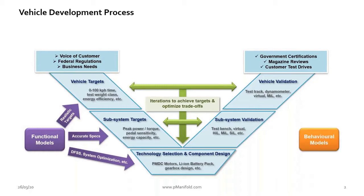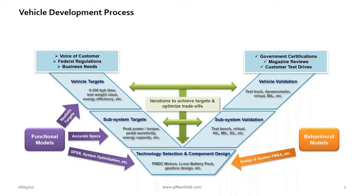Apart from functional models, there are behavioral models. Behavioral models are basically about the intrinsic properties of the subsystem. Functional models are more input-output kind of models, whereas behavioral models are where you study the internals of the subsystem — how it produces a given output for a certain input. Those models are useful for studying the designs themselves, how they are performing internally, for subsystem validation in terms of durability and robustness, for failure mode and effects analysis at both design and system level, and for reliability of the vehicle as the subsystems work inside it.